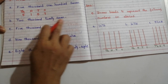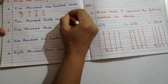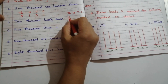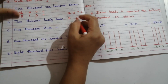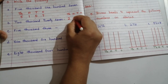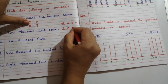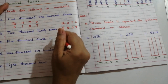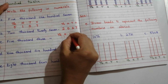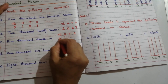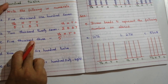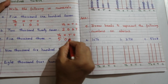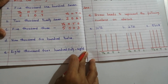Next: 2027 — 2000 in thousands, no hundreds value so put 0, 2 in tens, 7 in ones — giving 2027. Then 5003 — 5000 in thousands, no hundreds and no tens place value so write 0, 0, and 3 in ones — giving 5003.